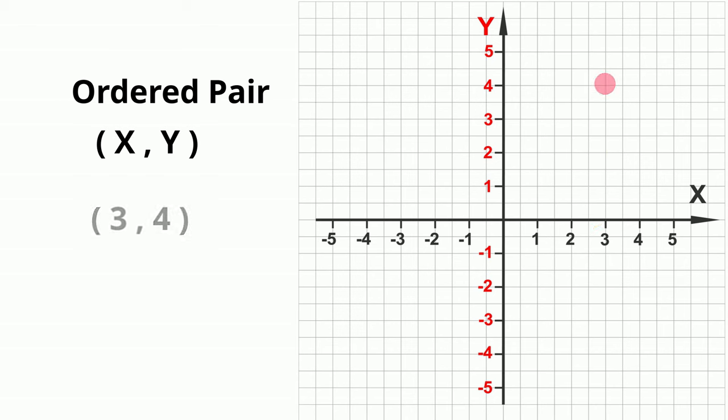Let's plot negative 2, negative 4. We start at the origin and then go to the left 1-2 and then down 1-2-3-4.